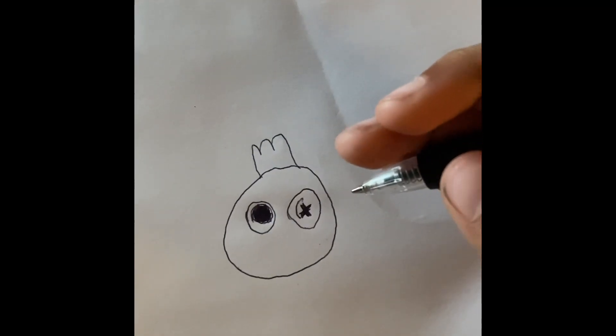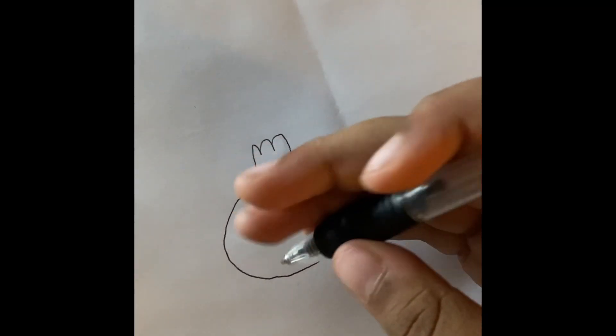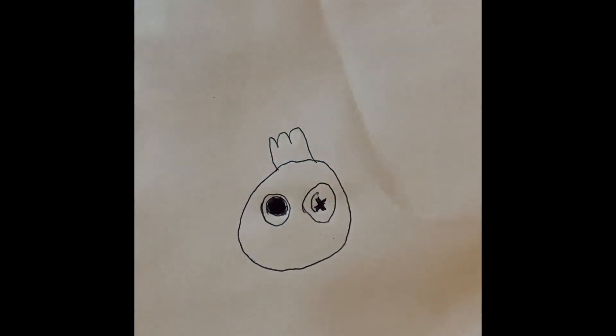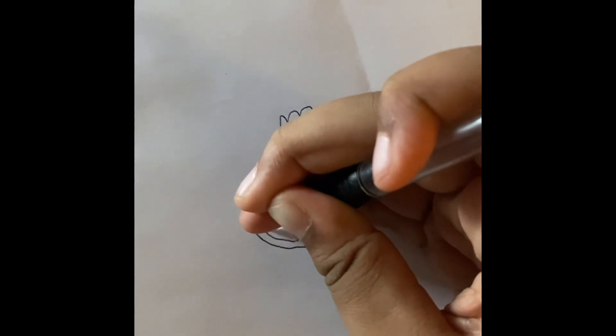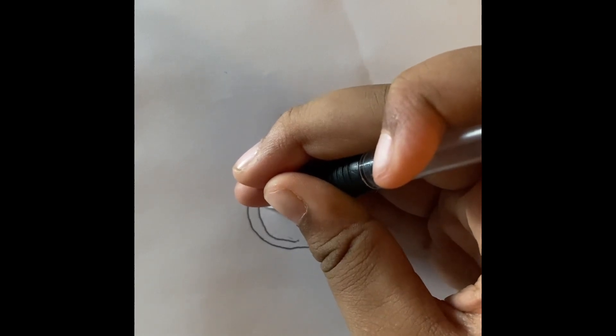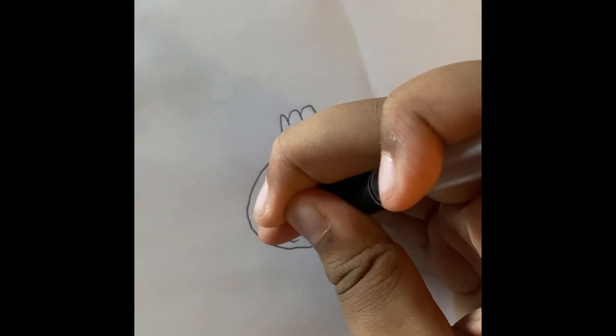Now we're gonna draw his mouth. We're gonna draw him like he's trying to roar at something, like yelling at it. So we're gonna do a big mouth like this. Draw it really creepy.